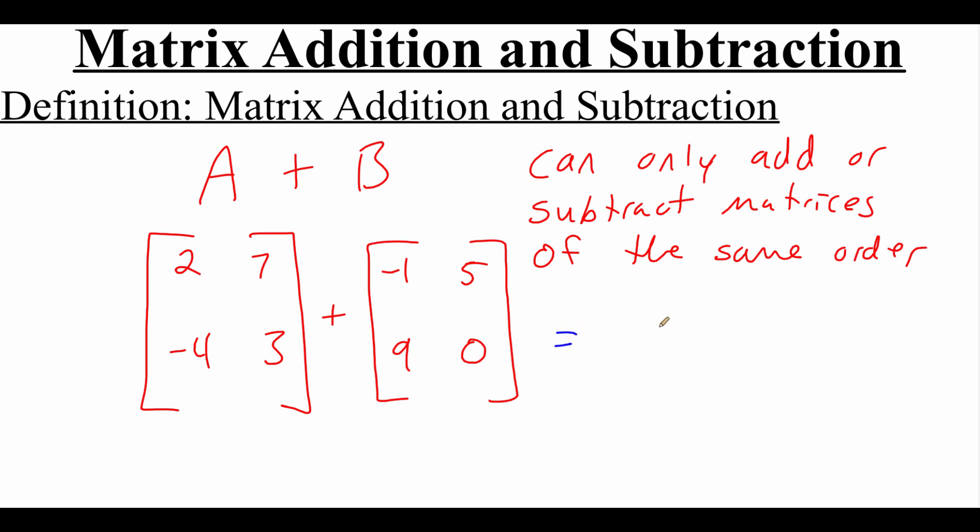So we're adding these two together and we're going to be getting a new matrix as our answer. And because we're adding, we're just going to add up the corresponding entries.